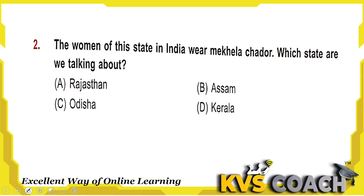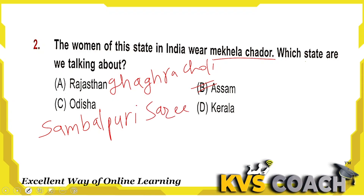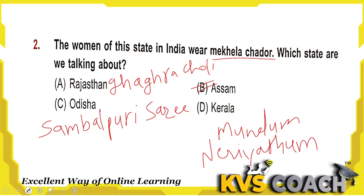Next question: the women of which state in India wear Mekhla Chador? This is the traditional dress Mekhla Chador, and it is from Assam. Rajasthan's traditional dress is Ghagra and Choli, also worn with Odni. Odisha's traditional dress is Sambalpuri Saree. Kerala's traditional dress is Mundum Neriyathu. So traditional dress Mekhla Chador is from Assam — option B is the right answer.